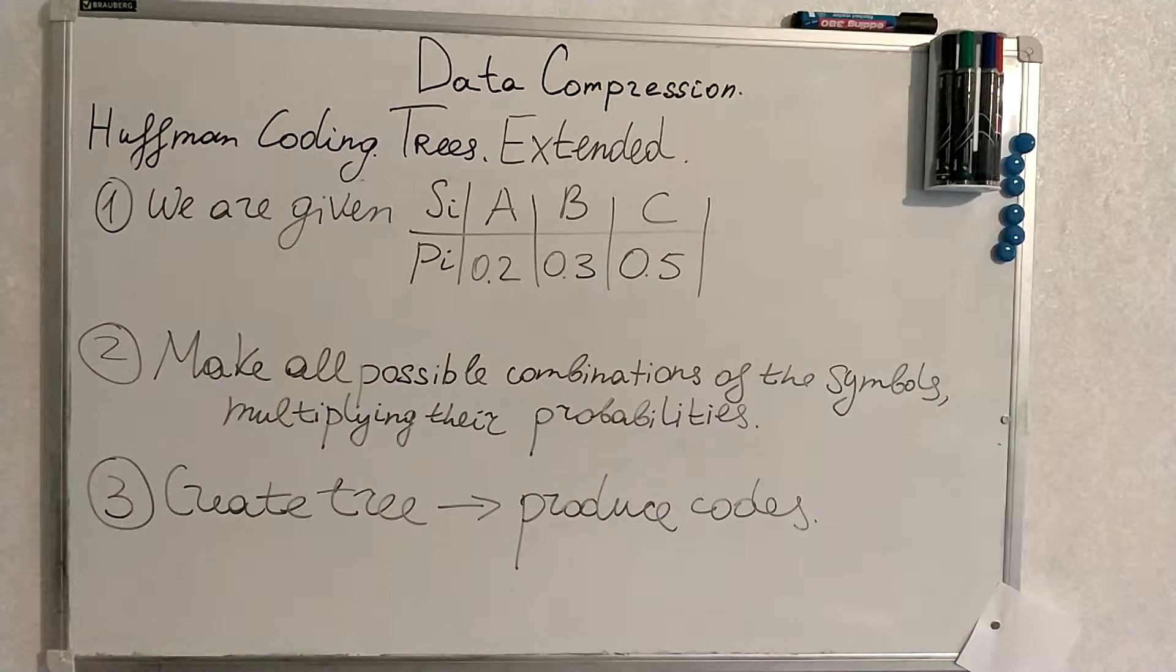Once again, it's the outline of the algorithm. We're given some symbols with their probabilities. We make all possible combinations of the symbols, multiplying their probabilities and concatenating the symbols.